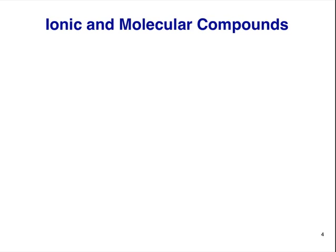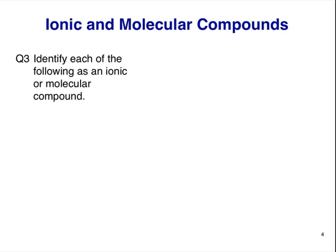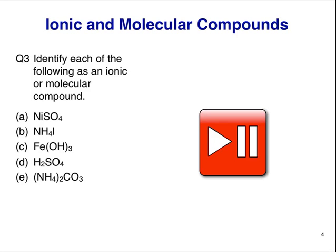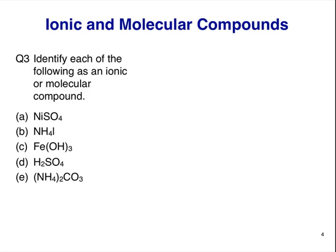Because ionic compounds made of polyatomic ions are more difficult to spot than those made only of monatomic ions, let's try some more. Question 3. Identify each of the following as an ionic or molecular compound. NiSO4, NH4I, Fe(OH)3, H2SO4, (NH4)2CO3. Pause here and work out your answers.